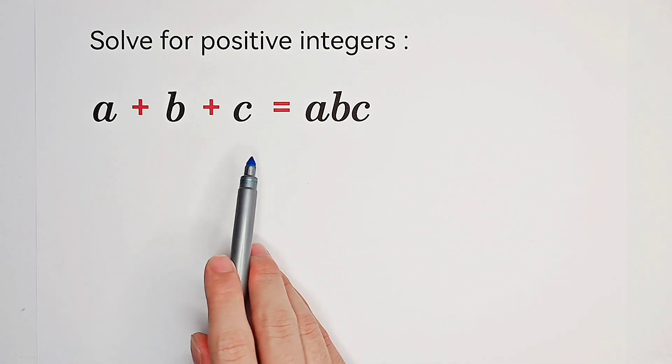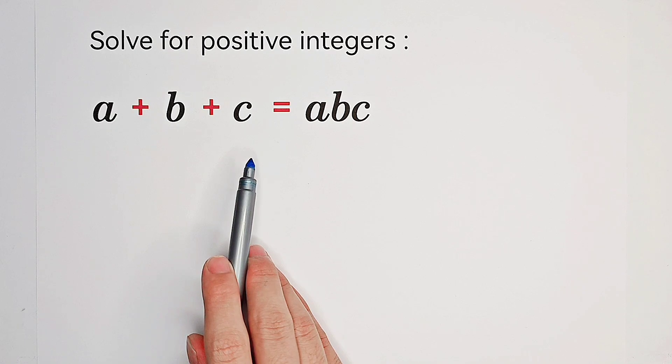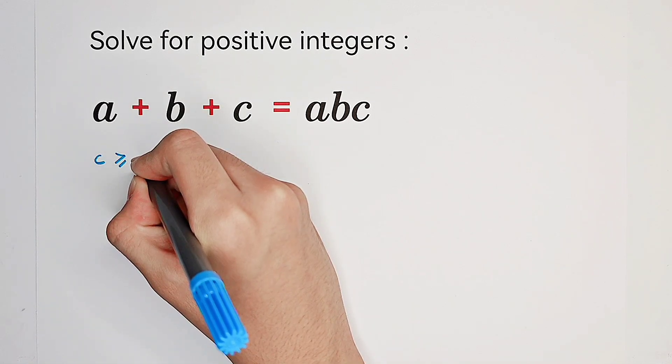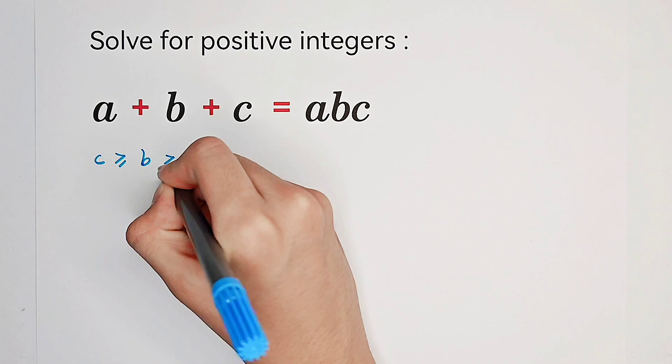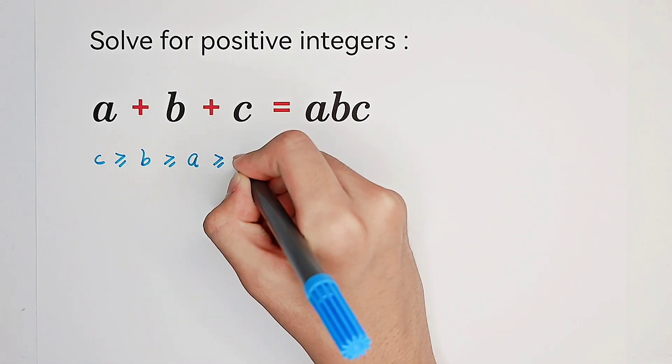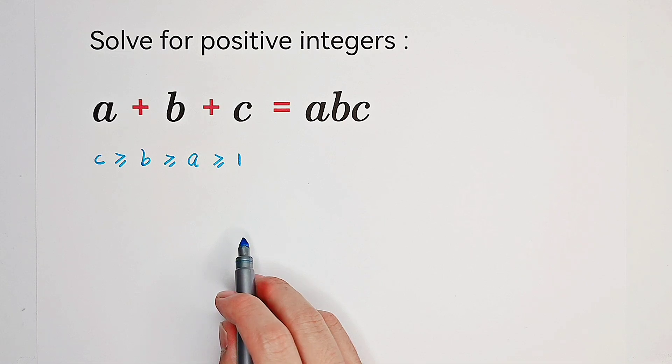You see, A, B and C appear symmetrically. So what we can do is, without loss of generality, suppose that C is bigger than or equal to B, which is bigger than or equal to A. So we just sort them and they're greater than or equal to 1.